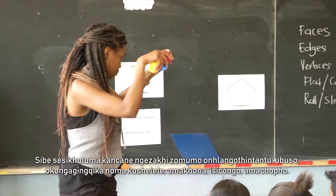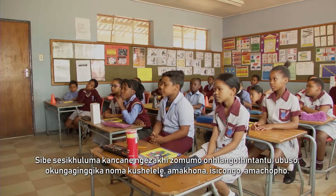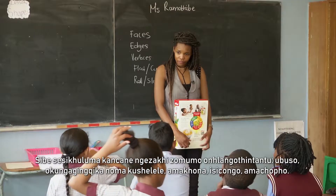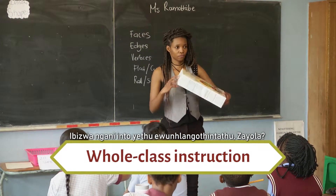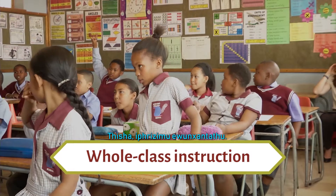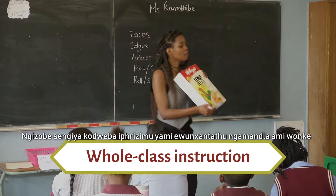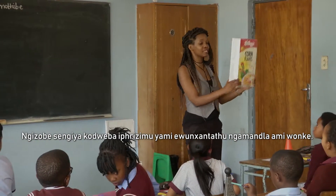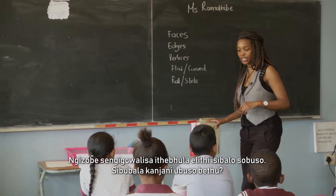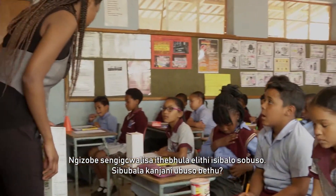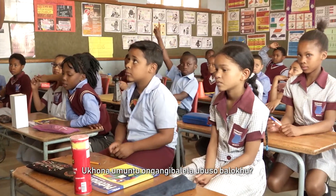Then we spoke about the properties of 3D objects — faces, whether they can roll or slide, the edges, the vertex, vertices. What is the name of our 3D object? Zayolan? It's a rectangular prism. Then I'm going to draw my rectangular prism and fill in the table which shows number of faces. How do we count our faces? Can somebody count the faces for me?